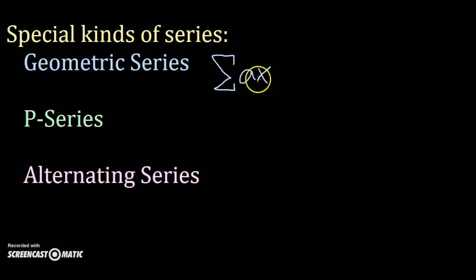The geometric series looks like a times x to the n, where a is a constant in each term of the series. Geometric series are always convergent. No tests needed.